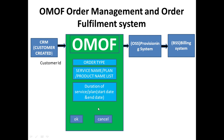Once this particular order is generated, the order details are taken as input by the OSS, that is the provisioning system — we have already seen the task of provisioning system in previous videos. This provisioning system will do the actual activation, deactivation, termination, or suspension of the order. All these order details are further taken as input by the billing system to generate the bill.